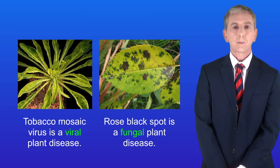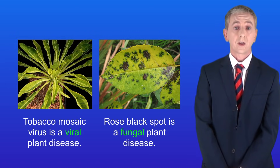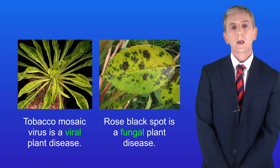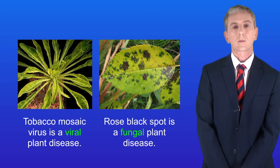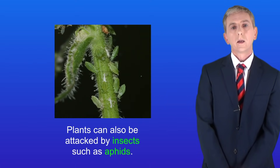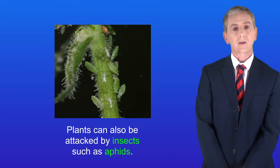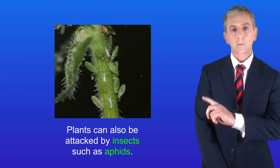We've already looked at plant pathogens in a previous video. For example, tobacco mosaic virus is a viral plant disease and rose black spot is caused by a fungus. Plants can also be attacked by bacterial pathogens. There are also many examples of plants being attacked by insects, and a good example are aphids which I'm showing you here.